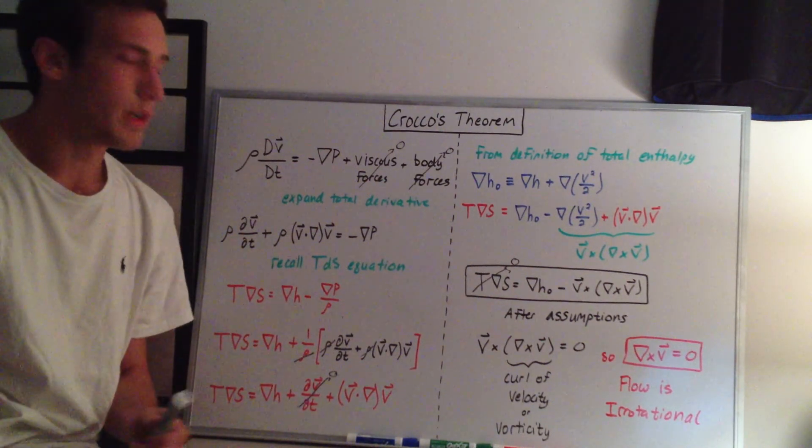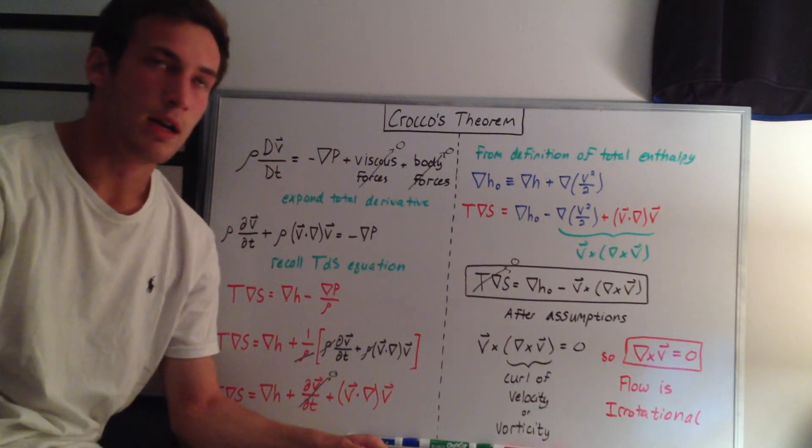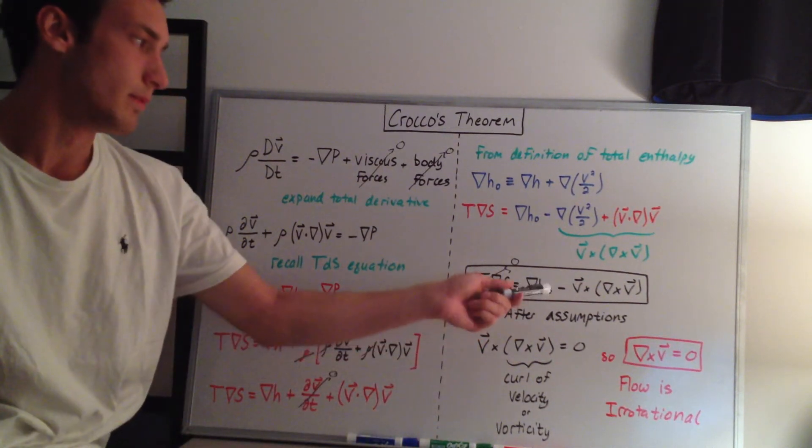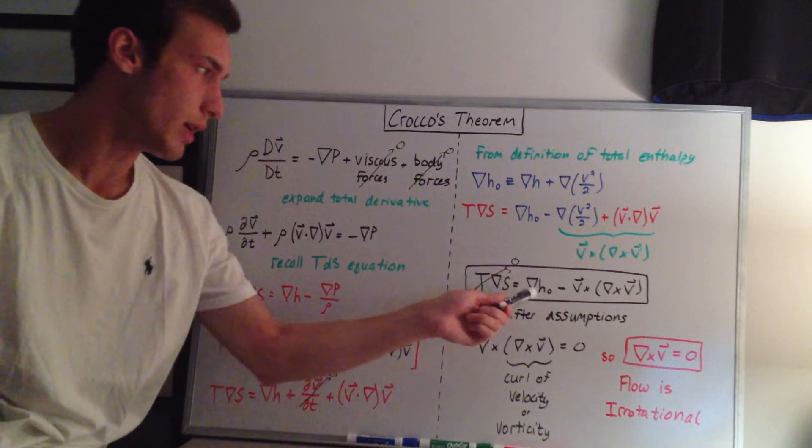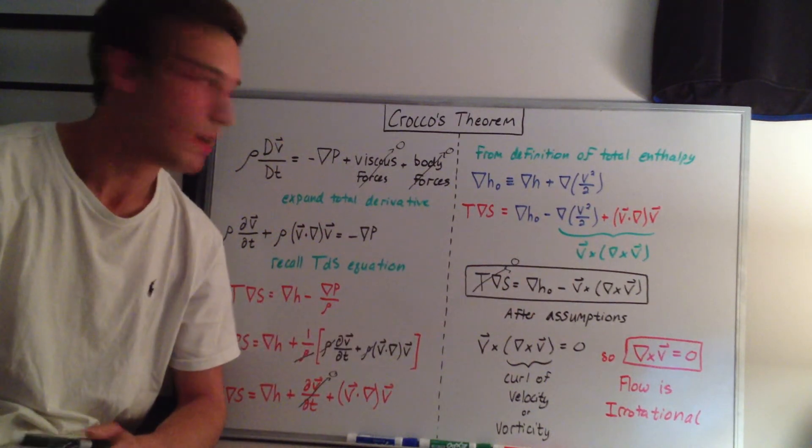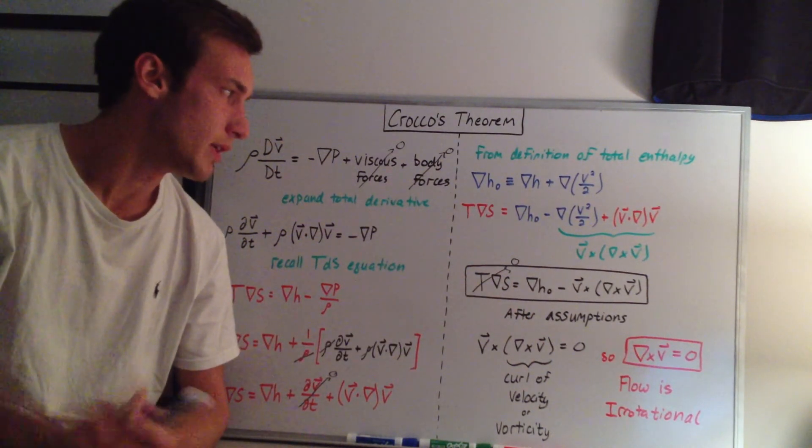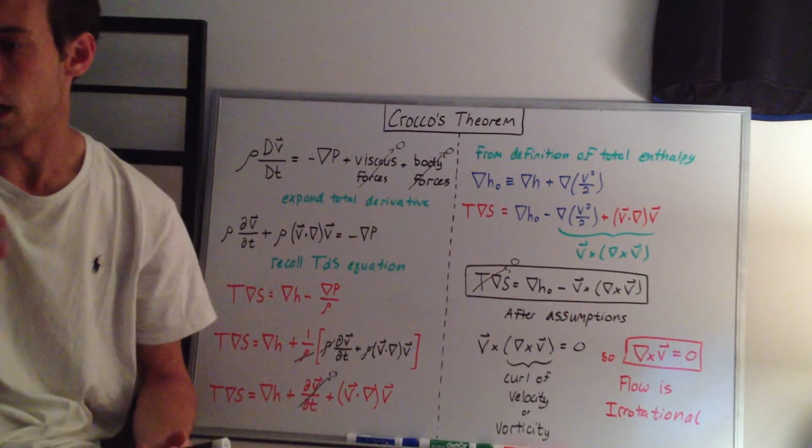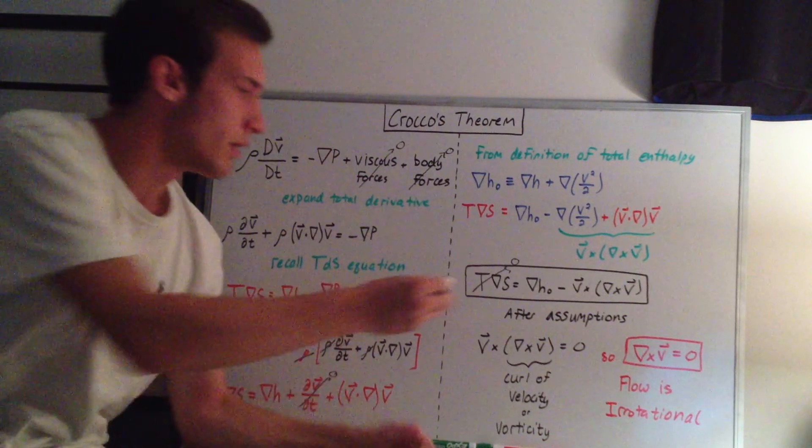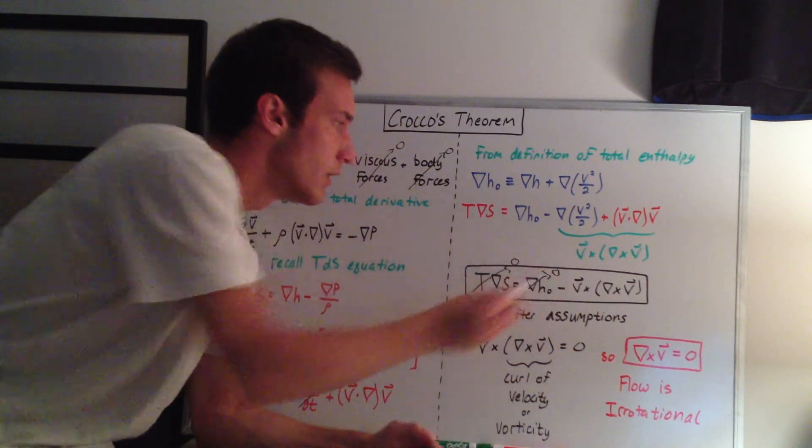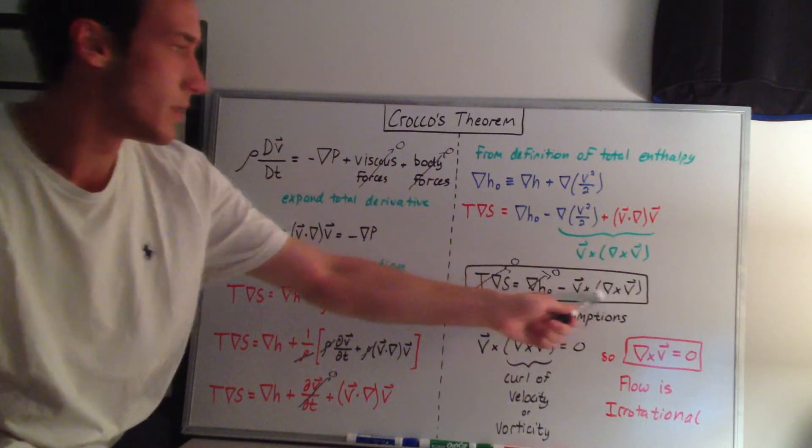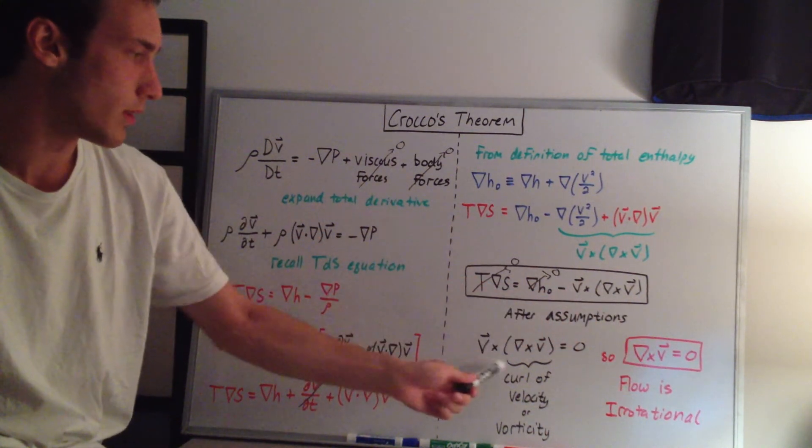And if you look at my enthalpy is constant video, you'll see that the total enthalpy is constant, which means the gradient of the enthalpy is equal to zero. That's because we have steady flow, adiabatic flow, inviscid flow, and no body forces. So then this goes to zero, and we're left with this term here equal to zero. That's what we get after the assumptions.